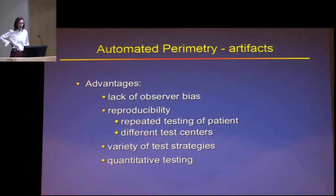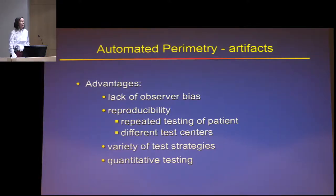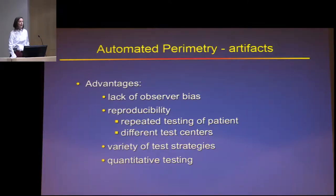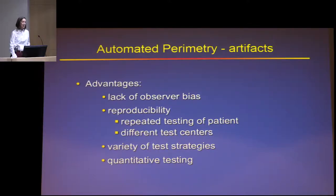The other nice thing about automated perimetry is there are a bunch of different test strategies. You've seen us using large bright stimuli — the size-5 stimulus — and various other approaches. A screening test or SITA Fast will be faster than most Goldmans, except for a Goldman intended for driving evaluation, which uses a single-size or three-size stimulus and can be done in literally 30 seconds. Automated perimetry is also very quantitative, which is helpful for following a defect over time.